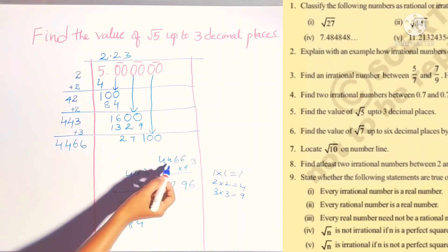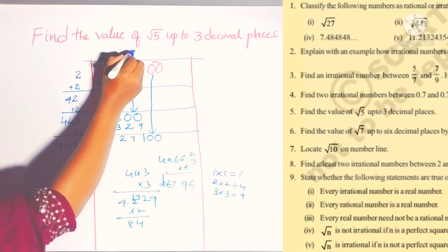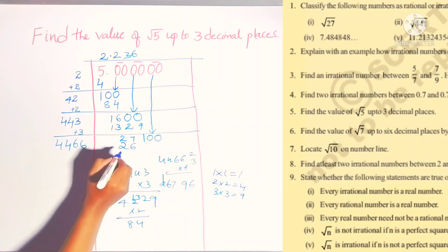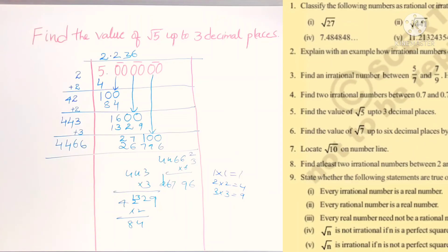Suppose 4 times 4 is 24 and there will be a 2, so this is 26 only. So write 6. This is 26796. After subtracting we get 27100 minus 26796.